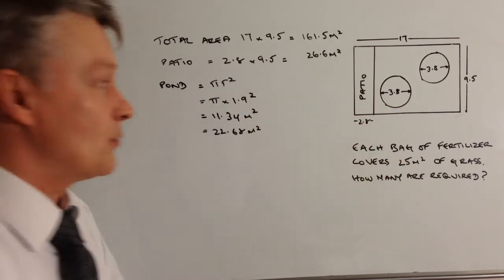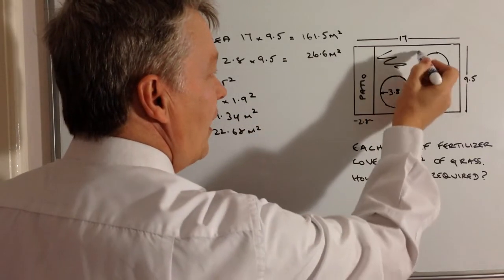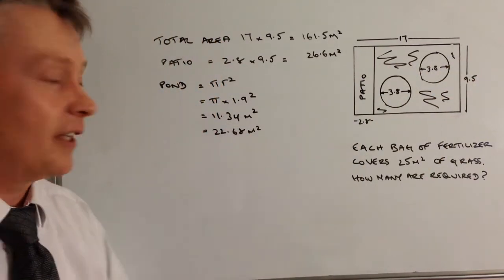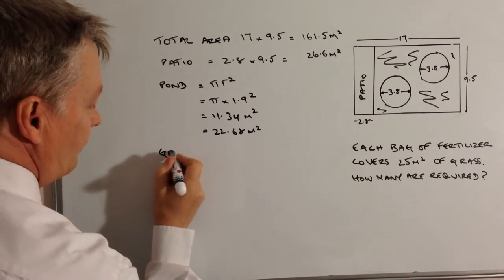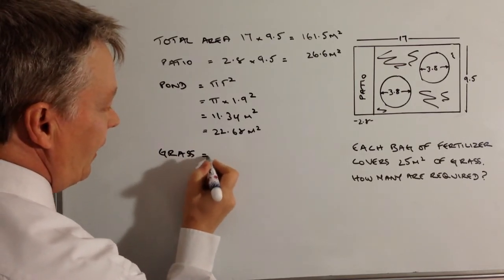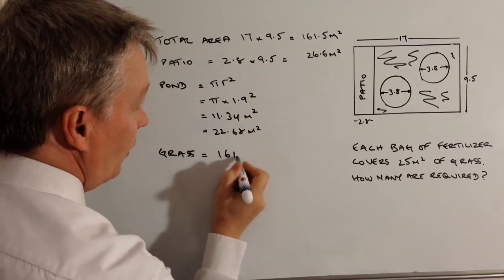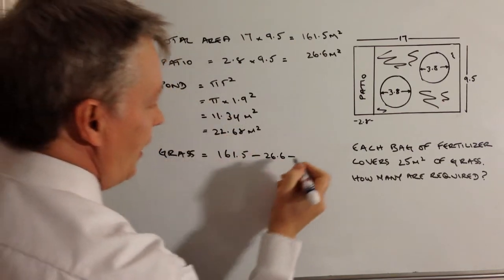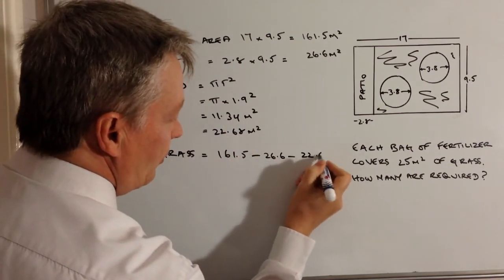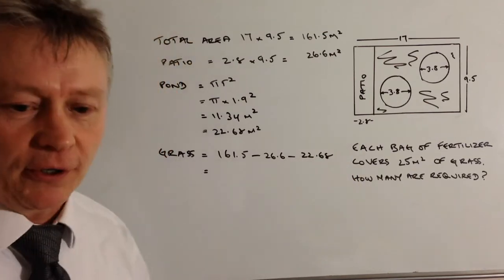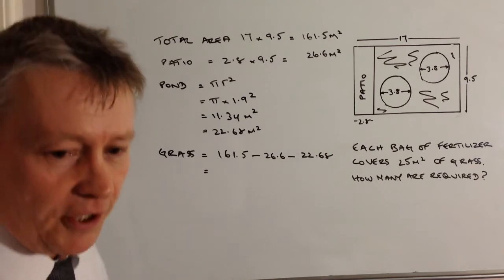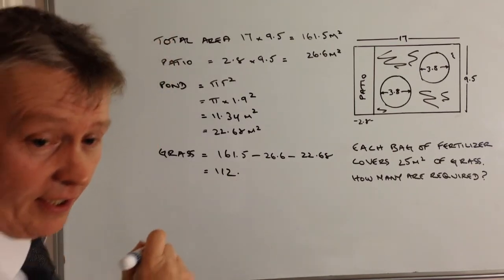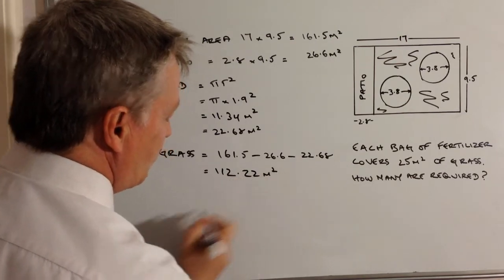Okay, so the area then of the grass which is all this area around here, okay, and on the actual question you'll see that it's shaded in, but the area of the grass is going to be the total area which is 161.5 minus the patio which is 26.6 minus the area of the ponds which is 22.68. And if you pop that all into a calculator you should get the area of the grass now is going to be 112.22 meters squared.